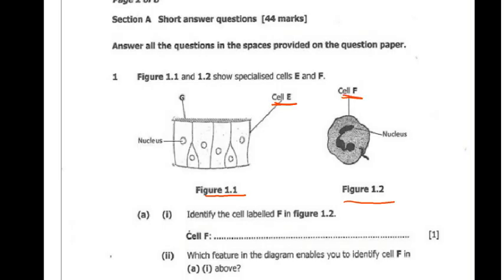Question 1(a)(i) says, identify the cell labeled F in figure 1.2. So figure 1.2 is this one. So that is a white blood cell. This is a white blood cell. To specialize it, it is actually a phagocyte. Phagocyte.